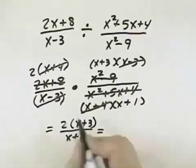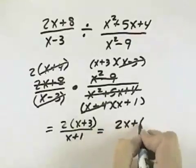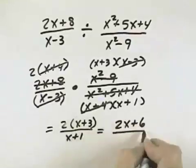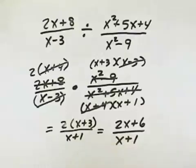And if you'd like, you can multiply the numerator out to be 2x plus 6, using the distributive property, over (x + 1) for our simplified form.